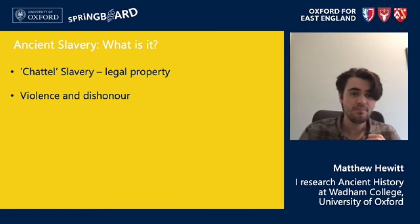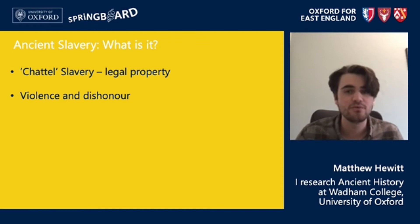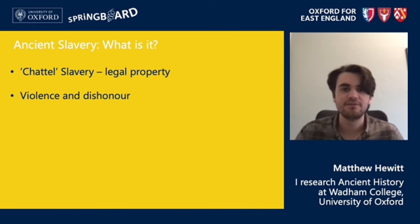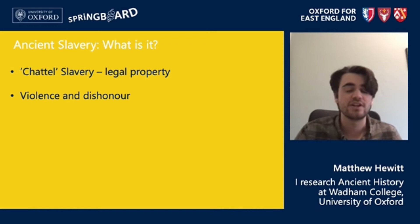In the ancient world it's extremely difficult to judge the scale of slavery because we don't have any reliable ancient numbers. But what we do see is that slavery appears in all corners of ancient society, so we can be fairly certain that it was a strategy employed very widely in a variety of contexts.